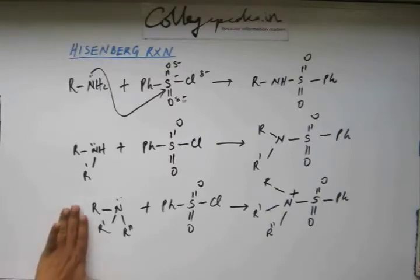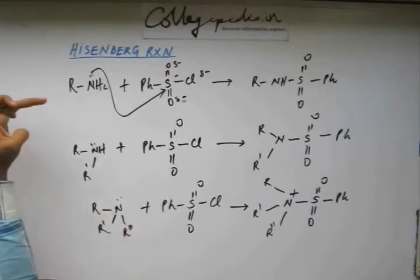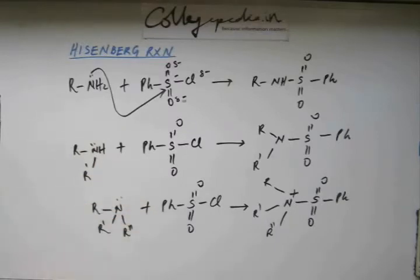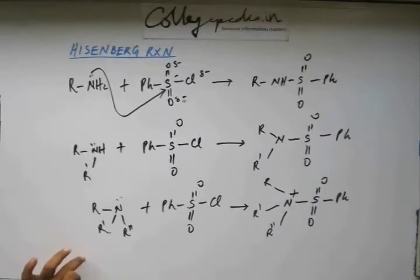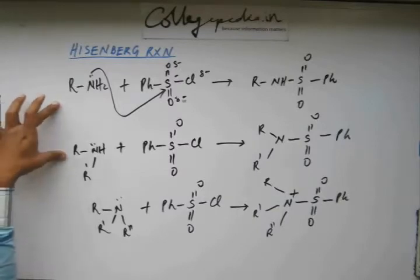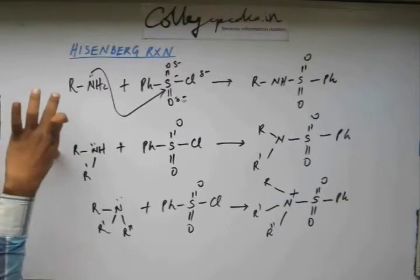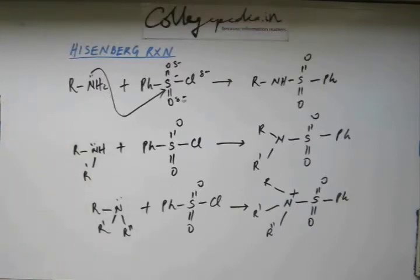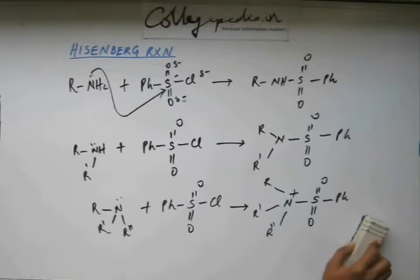So to summarize: there will be no reaction between a third degree amine and phenyl sulfonyl chloride, but there will be reaction with first and second degree amines. In the first stage of the test, you make whatever amine you have react with phenyl sulfonyl chloride. If it does not react, it is confirmed to be a third degree amine. If it doesn't react, it's third degree; if it does react, it can be first degree or second degree.